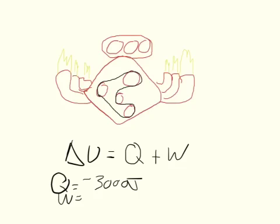So there's 1,700 joules of energy done as work on the environment by the engine. So the work by the engine is equal to the negative of the work on the engine.